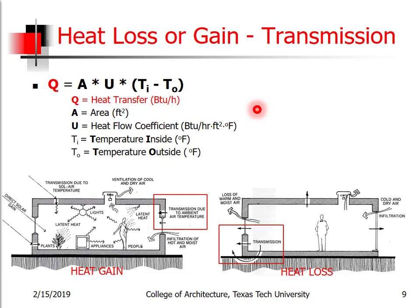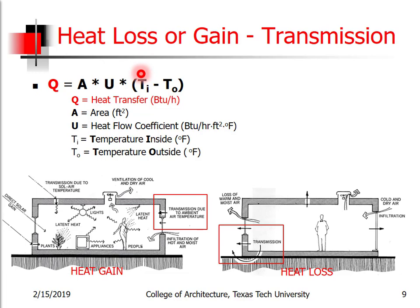Let's look at the basic algorithm we use to calculate the transmission of heat — either heat loss or heat gain. The formula is: heat transfer Q (in BTUs per hour) equals the area of the surface times the U-value or heat flow coefficient, times the delta T, which is the difference between inside and outside temperature in Fahrenheit. We talked about U-values, U-factors, K's and C's and how we calculate those, and we'll revisit that.